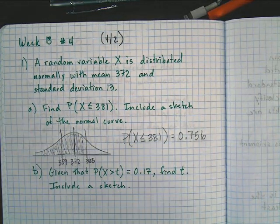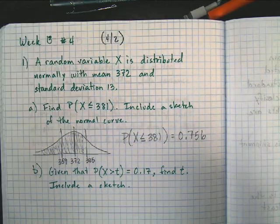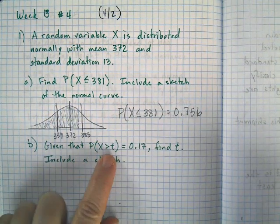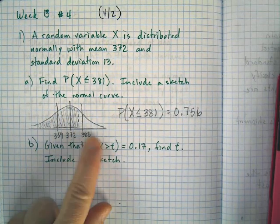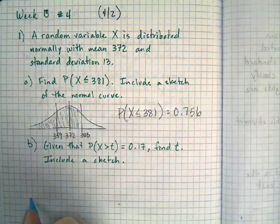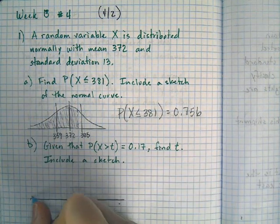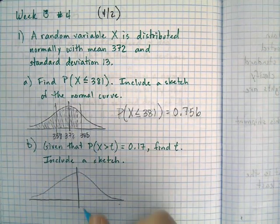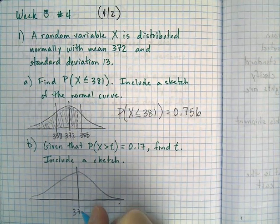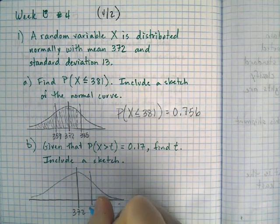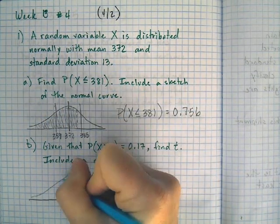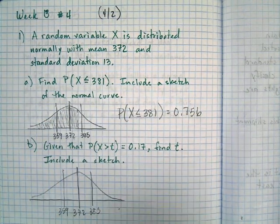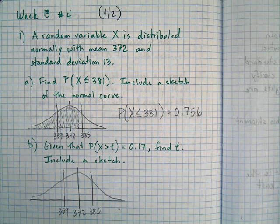Now, next question. We're still dealing with the same random variable. And this time, though, we know the probability, but we don't know the value on the x-axis. So I am going to draw my normal curve again. Give me a bell-shaped curve. The mean, again, is 372. The standard deviation is still the same, so 385 and this side, 359. So notice it's just a real quick and dirty sketch.